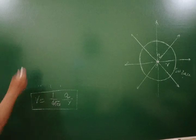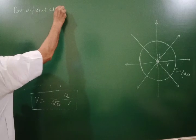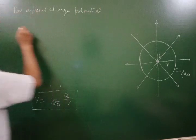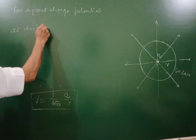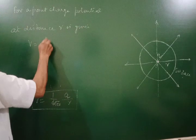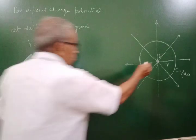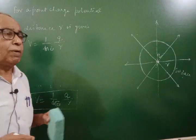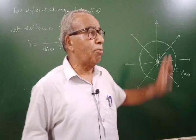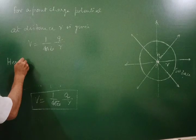For a point charge q, the potential at distance r is given by V equal to one upon four pi epsilon zero times q by r. So at every distance r from the origin, we get the same potential. The locus of points equidistant from a given point in space is called a sphere, and hence a sphere centered at a point charge is an equipotential surface.